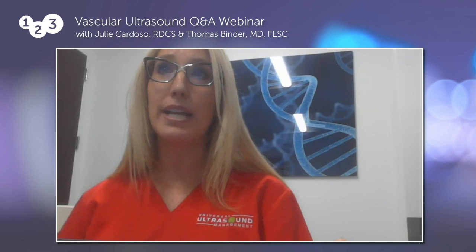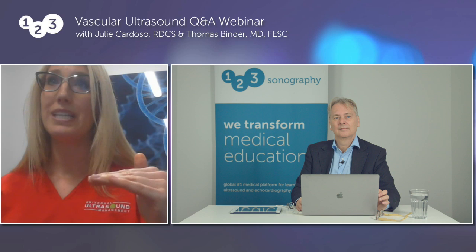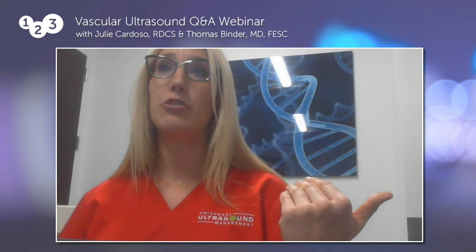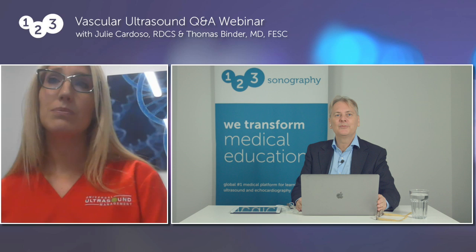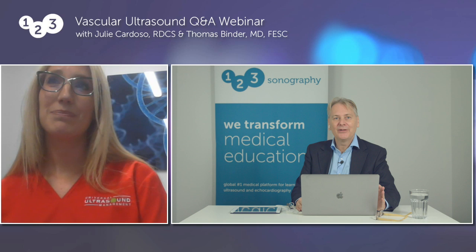Reverse Trendelenburg will automatically increase hydrostatic pressure to dilate the veins, making the tibial veins, peroneal veins, and anterior tibial veins easier to see. For arteries, dilating the veins helps the heavily calcified arteries become easier to see. If you don't have access to reverse Trendelenburg, you can also just have the patient bend their knee — that will automatically increase hydrostatic pressure for below-knee vessels.